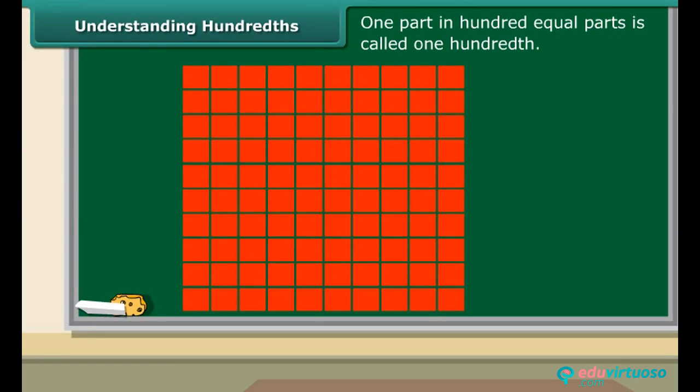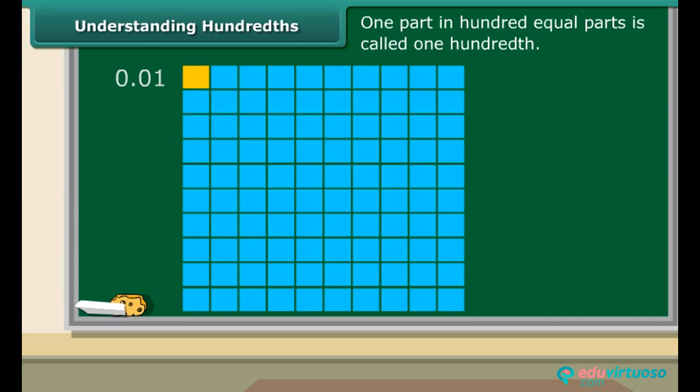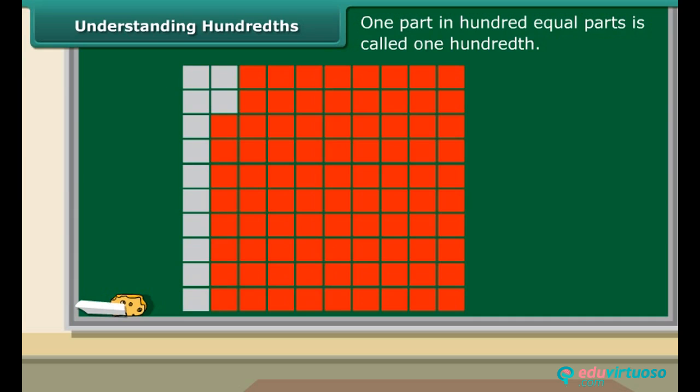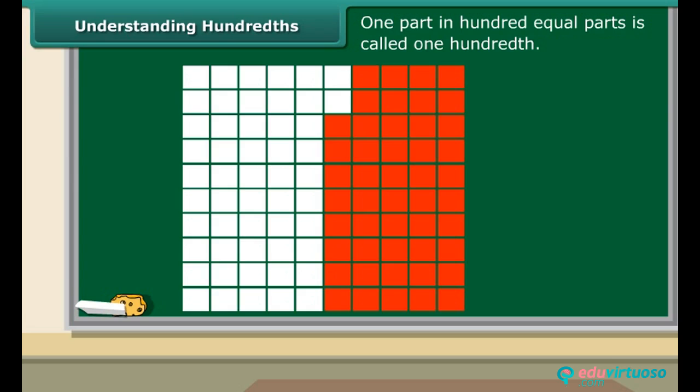One part in 100 equal parts is called one-hundredth. Each small square is called one-hundredth of the whole square. In decimal notation, we read it as 0.01. 12 shaded squares will make 12 hundredths or 0.12. 33 shaded squares will make 33 hundredths or 0.33. 52 shaded squares will make 52 hundredths or 0.52.